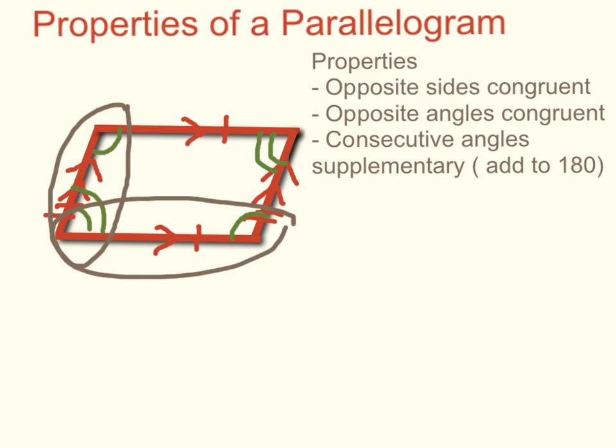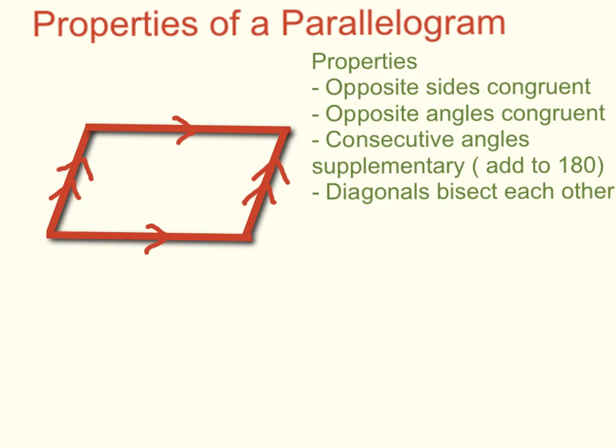Let me clean this up. Another property is that if I draw diagonals, those diagonals are going to bisect each other or cut each other in half. So these are the two diagonals. That means that this segment is equal to this segment, and this one is equal to that segment.